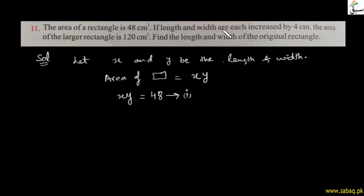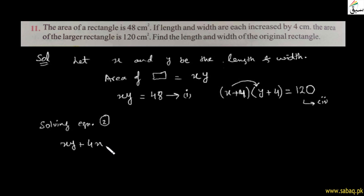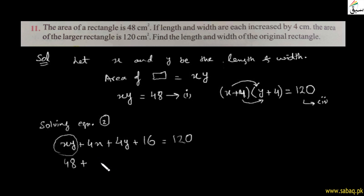Length اور width دونوں میں 4 cm increase کیا جائے تو (x + 4)(y + 4) = 120 — یہ equation 2 ہے۔ Expand کریں: xy + 4x + 4y + 16 = 120۔ xy کی جگہ 48 put کریں: 48 + 4x + 4y + 16 = 120۔